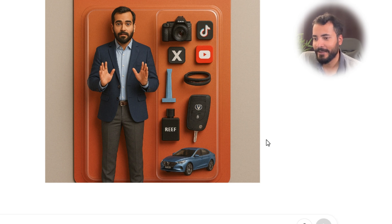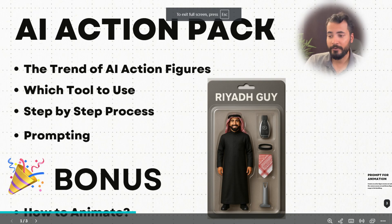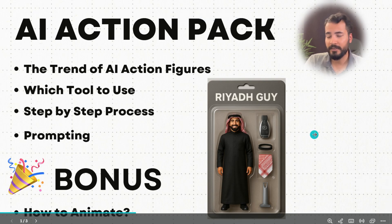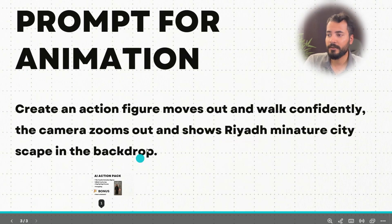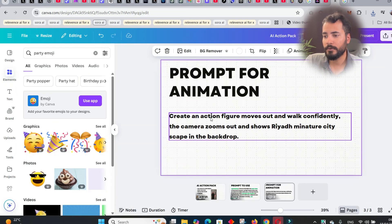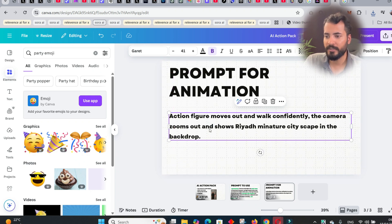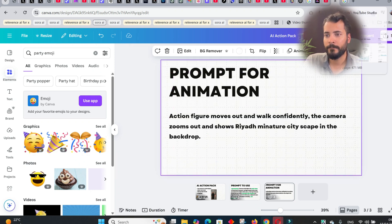This is what the refined version made, but I think the previous one was better, so I'll go with that and download it. Now let me take you to the bonus step — animating the image. The animation prompt I'll use is: 'Action figure moves out and walks confidently, and the camera zooms out and shows a Riyadh miniature cityscape in the backdrop.'